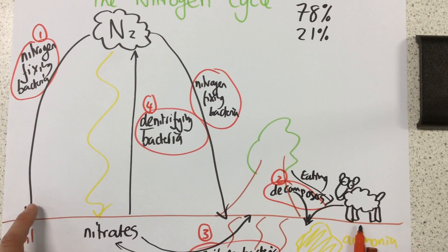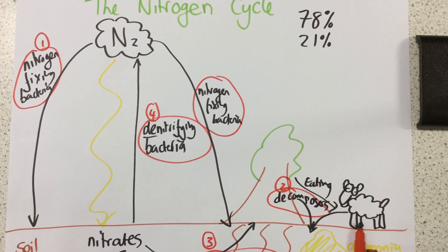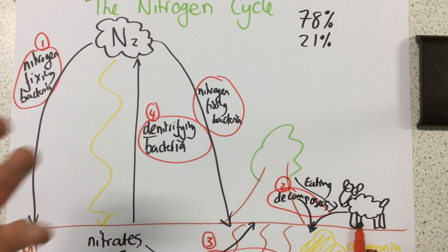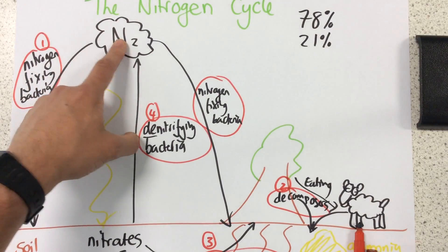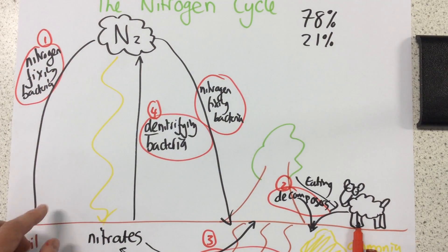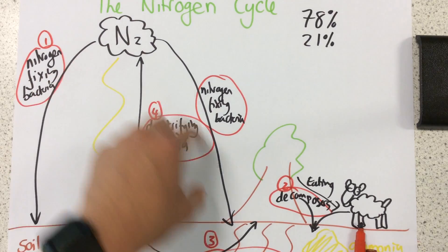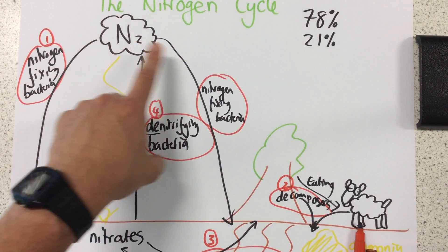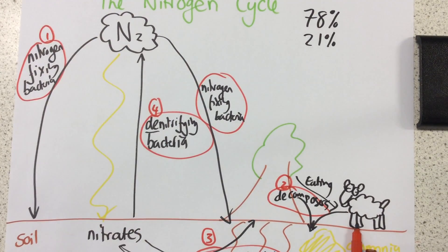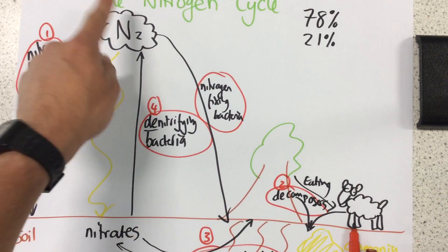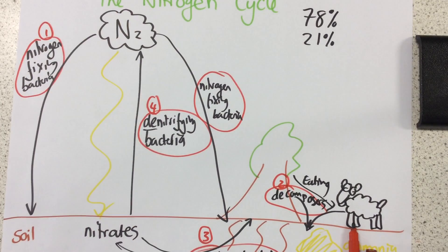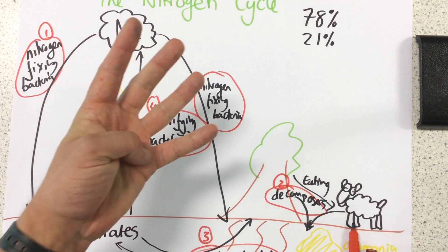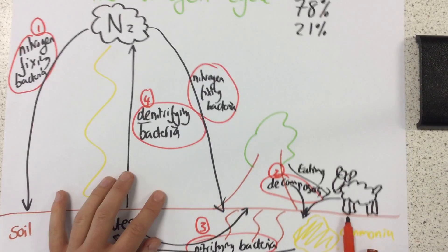The best way to learn this is to keep drawing it and practicing it, thinking one step at a time. Remember: there are three different things that remove nitrogen from the atmosphere, only one that returns nitrogen to the atmosphere, and there are four types of bacteria.